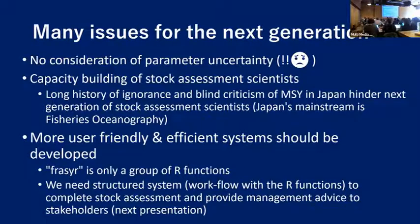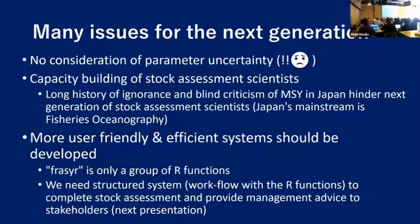Currently, the Japanese mainstream field is fisheries oceanography, not stock assessment — many students come from the fisheries oceanography field. We need more user-friendly and efficient systems. Frasier R is just a group of R functions, so we need a structured system or workflow with R functions to complete stock assessment and provide management advice to stakeholders.